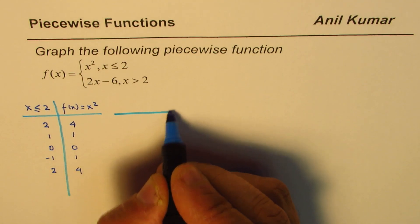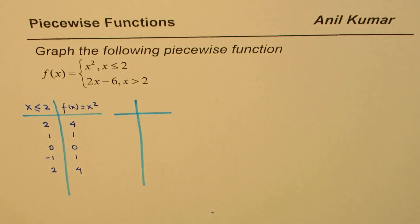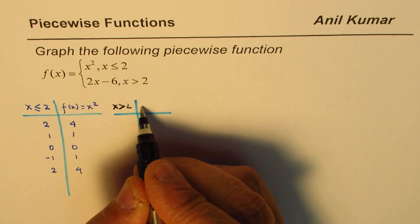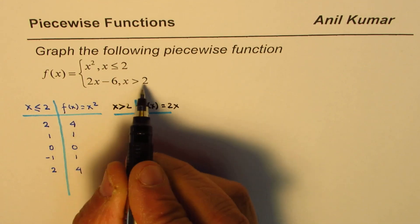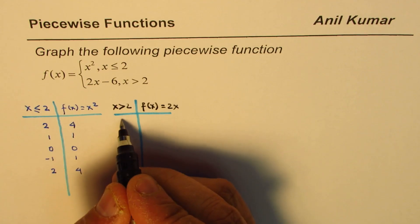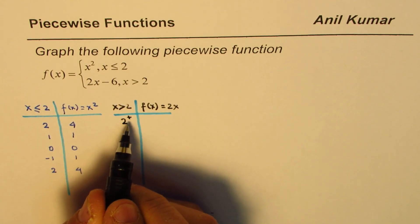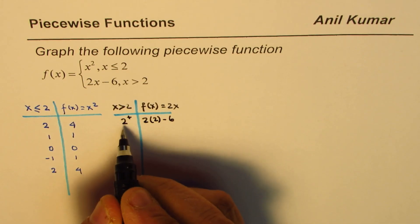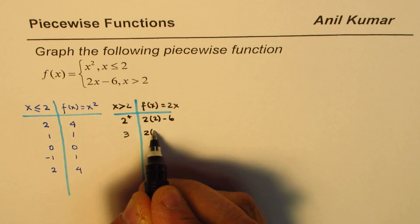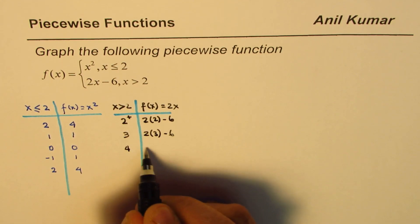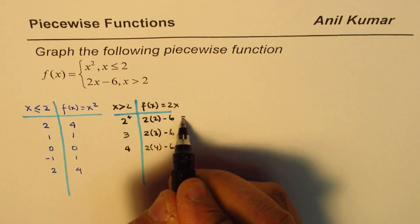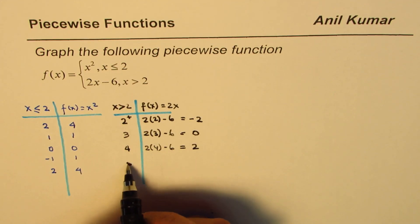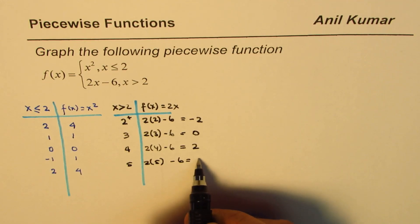Now let us also sketch what happens when we have x values greater than 2. In that case, f(x) equals 2x minus 6. Let's take the value 2 as a starting reference — slightly more than 2 — and calculate: 2 times 2 minus 6, then at x equals 3, 2 times 3 minus 6, and at x equals 4, 2 times 4 minus 6. That gives minus 2, 0, and 2 respectively.